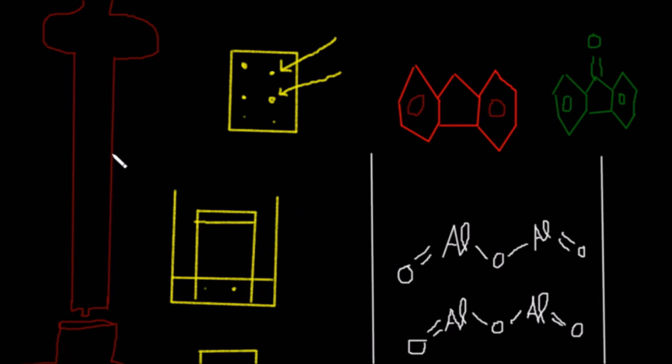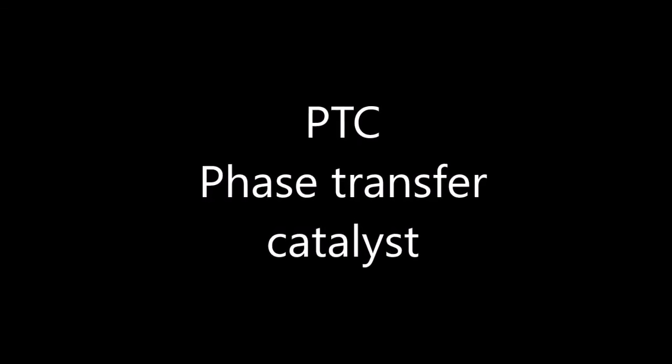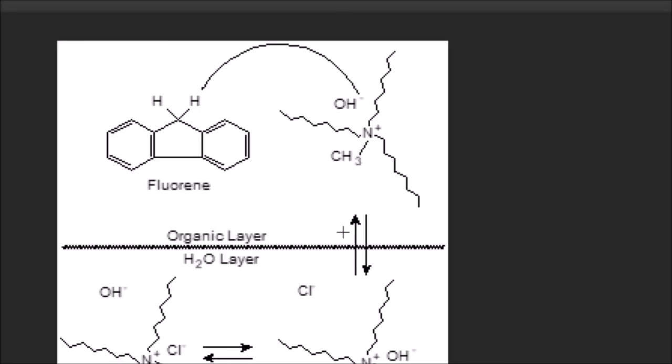During the column chromatography, how can you tell when the fluorene has completely gone into your Erlenmeyer, and how can you know if you have fluorenone in it? You use a TLC paper to test if you have fluorenone in the mixture. If you have fluorenone, that's how you know you will stop and change the Erlenmeyer.